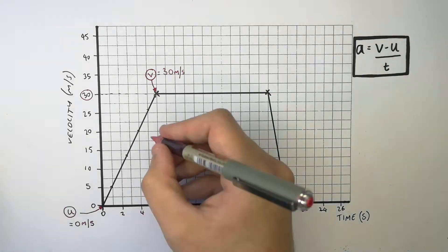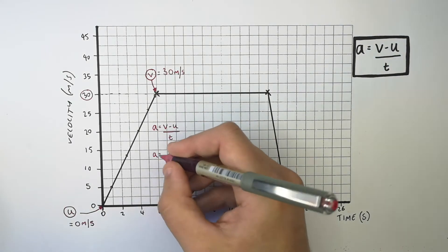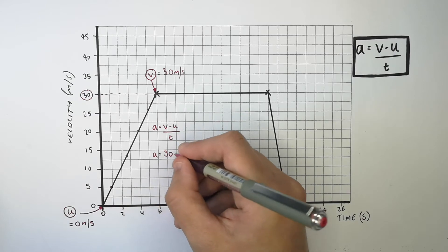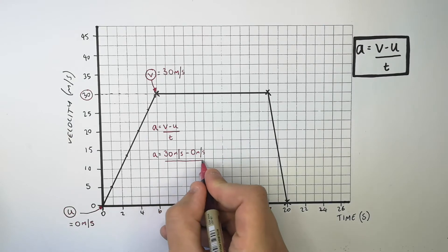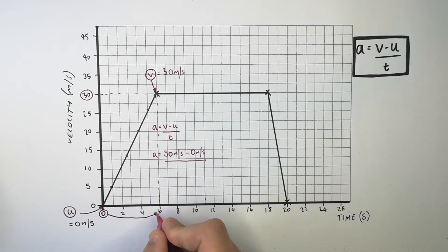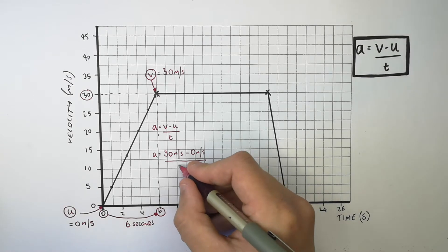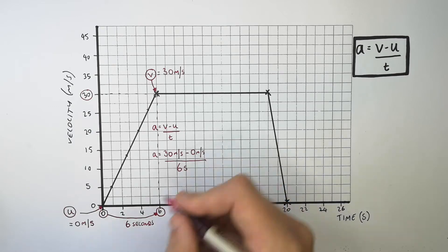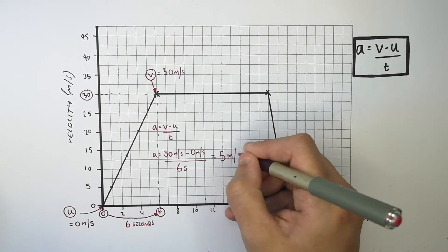Now we recall the equation a equals v minus u over t and substitute in the numbers. So a equals v, which is 30 metres per second, minus u, which is 0 metres per second, divided by the time of 6 seconds. The change in velocity is 30 metres per second divided by 6 seconds, which gives you an acceleration of 5 metres per second squared.